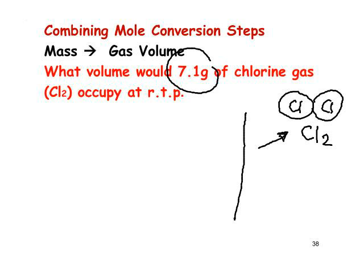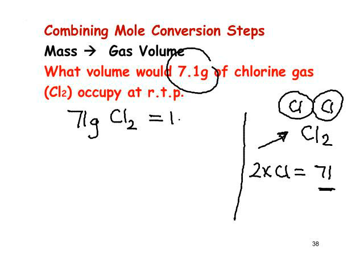In mole calculations, we take moles of the chemical as it exists in nature. So when we talk about a mole of chlorine, we're talking about Cl₂. To work out what a mole of chlorine weighs, there are two chlorines in the formula, so we take two times Cl. The atomic mass of chlorine is 35.5, so the relative molecular mass is 71. That allows us to write that 71 grams of Cl₂ equals one mole.